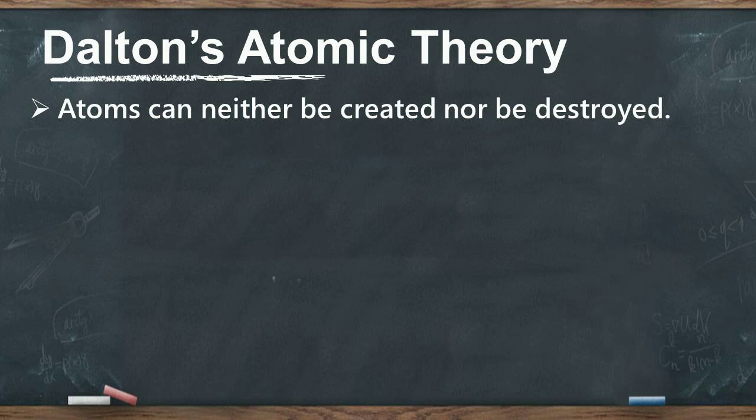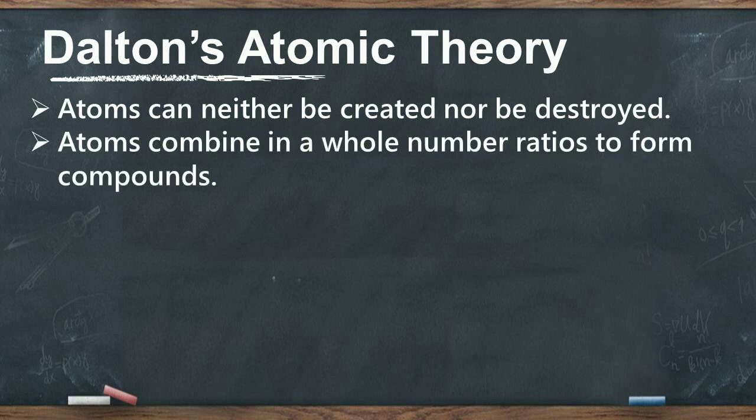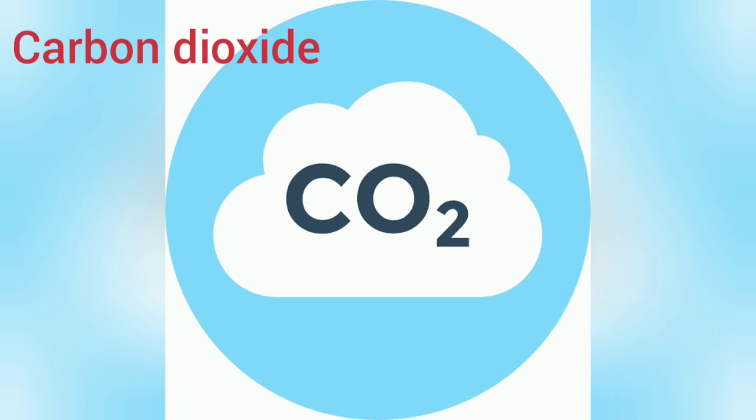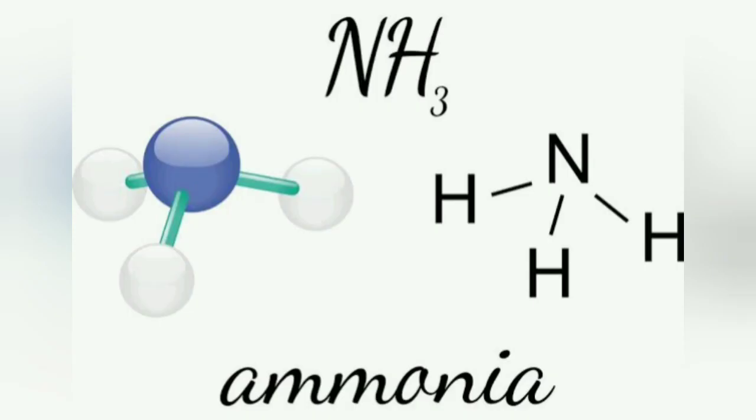Atoms can neither be created nor be destroyed. Atoms always combine in whole number ratios to form compounds. For example, in CO2, the ratio of the number of carbon atoms to oxygen atoms is 1:2, and in NH3, that is ammonia, the ratio of the number of nitrogen atoms to hydrogen atoms is 1:3. These ratios are always fixed.